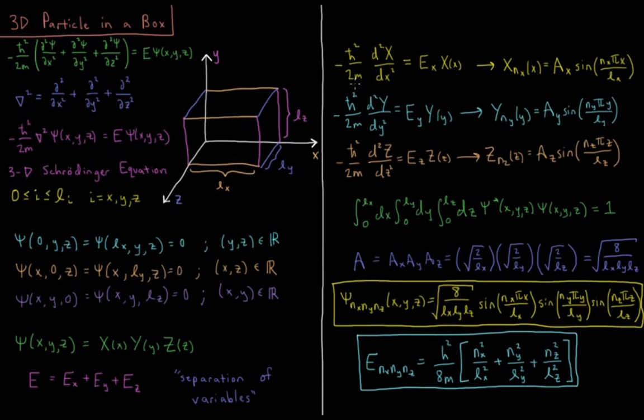Minus h-bar squared over 2m, second derivative with respect to x, times the function equals ex times that function. And we know the solution to this in one dimension is that the x function, with respect to the quantum number nx, equals normalization constant, ax, times sine nx pi x over lx.